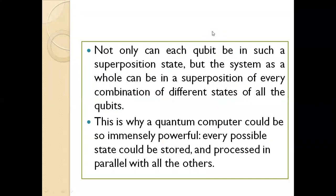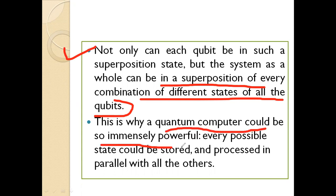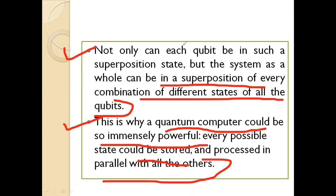Not only can a qubit be in a superposition state, but the system as a whole can be in a superposition of every combination of different states of all the qubits. This means every possible state could be stored and processed in parallel with all the others. That is the magic of quantum computing — everything can be done in parallel, and this power is immense.